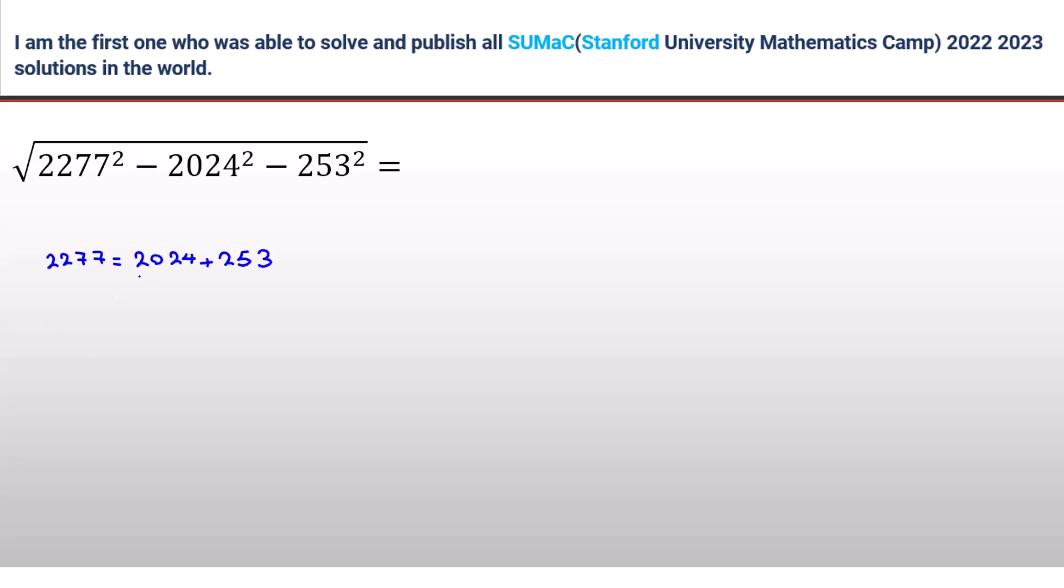Now we can say what? We can consider this one is a, this one is b. So let's calculate first inside the square root. We can say it is square root of x. x is 2277, which is a plus b.